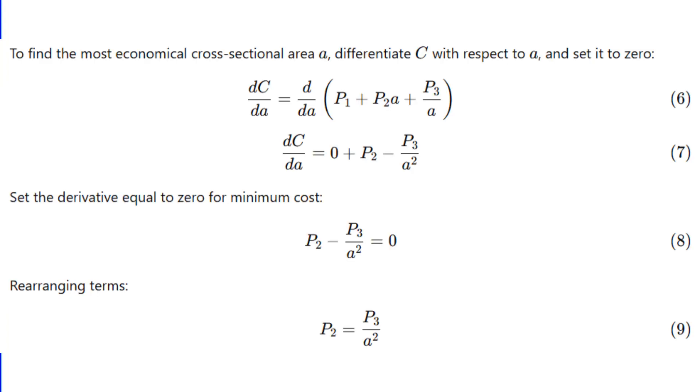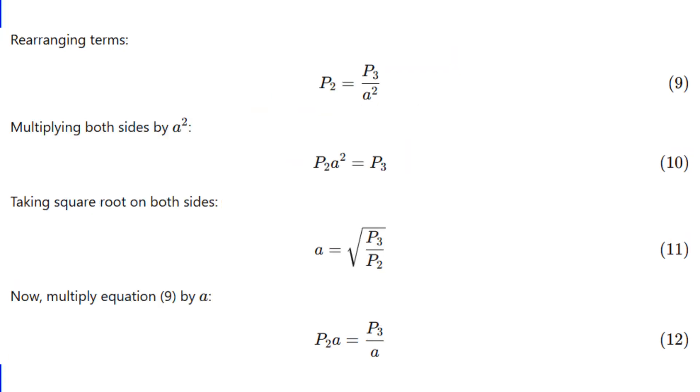Now comes the optimization part. To find the most economical area, we differentiate the total cost with respect to A and set it to zero. So, dC/dA becomes P2 minus P3 by A squared, which is equal to zero. Solve that and you get P2A equals P3 by A. Or in simple words, variable annual charge equals the cost of energy lost per year. That's Kelvin's law.